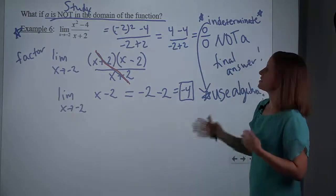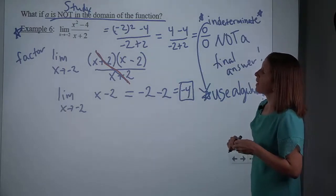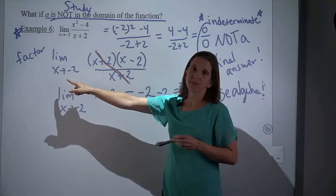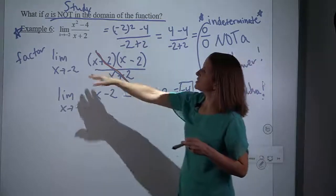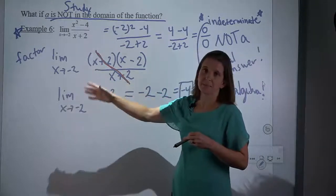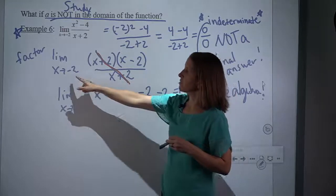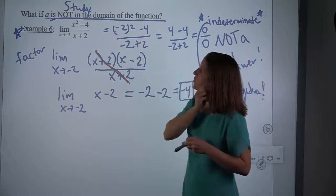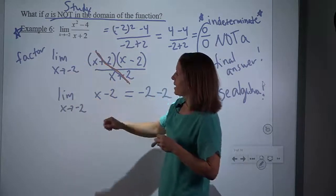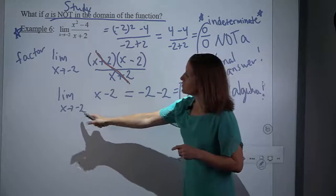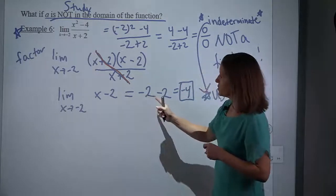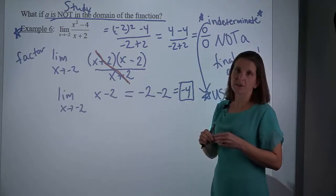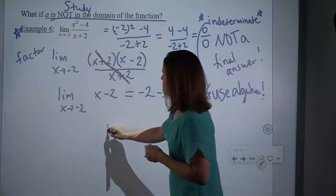There are a couple things we need to start being really careful about. Notice that while I was doing this algebra, the limit sign was still there. It is mathematically false for the limit sign to just appear and disappear. It really matters that we're talking about when you get close to negative 2, not when you're at negative 2. So we need to make sure that the limit sign stays the whole time.